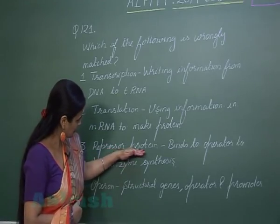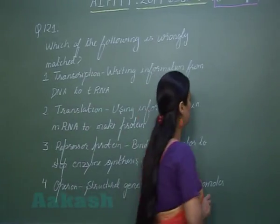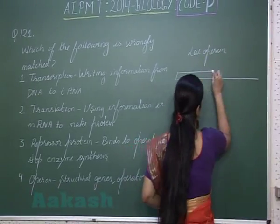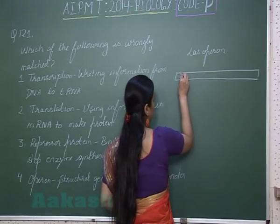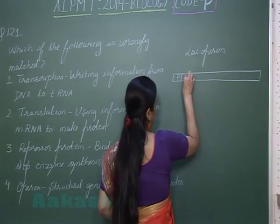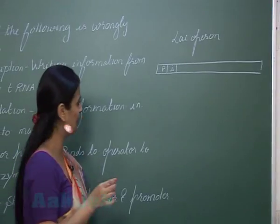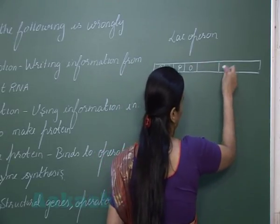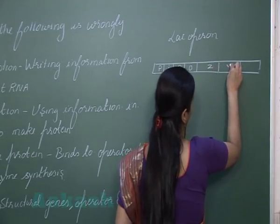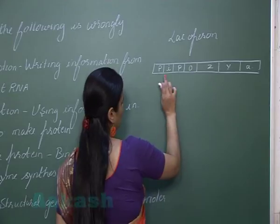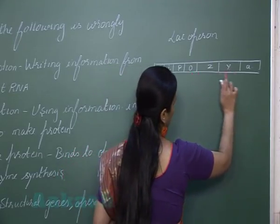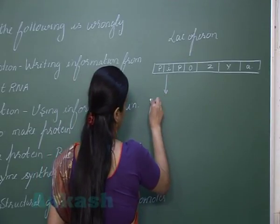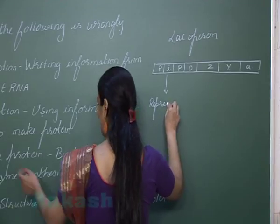The next option is about repressor protein, which is related to the operon. To understand this, let's draw a lac operon. In the lac operon there is a promoter, then the I gene which is the inhibitor or regulator gene, then the promoter, then the operator, and then three structural genes: Z, Y, and A. These are the components of the operon. The I gene results in the formation of a protein called the repressor.